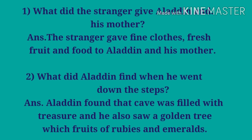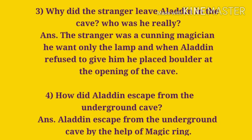Next question is what did Aladdin find when he went down the steps? The answer is Aladdin found that the cave was filled with treasure and he also saw a golden tree with fruits of rubies and emeralds. Next question is why did the stranger leave Aladdin in the cave? Who was he really? The answer is the stranger was a cunning magician. He wanted only the lamp and when Aladdin refused to give him, he placed a boulder at the opening of the cave.